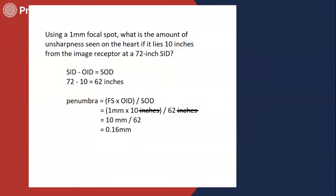Here's an example problem: Using a 1 millimeter focal spot size, what is the amount of unsharpness seen on the heart if it lies 10 inches from the image receptor at a 42-inch SID? We're given a SID and an object-to-image receptor distance, so we find the SOD by subtracting: 72 minus 10 gives us 62 inches. Now we plug into the penumbra formula. We don't need to convert inches to centimeters because the inches cancel out. Setting it up: 1 millimeter times 10 inches, divided by 62 inches — the inches cancel, leaving 10 millimeters divided by 62, which equals 0.16 millimeter.